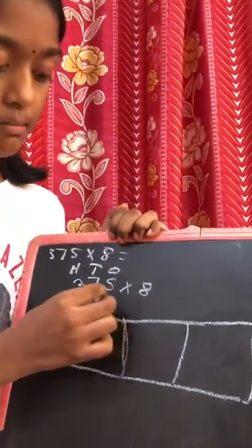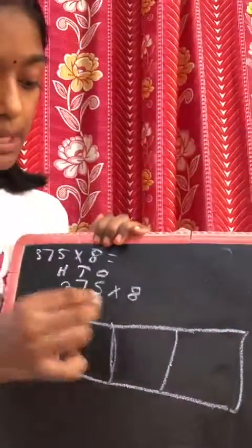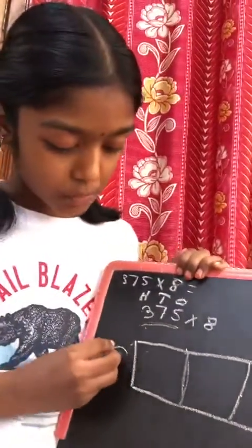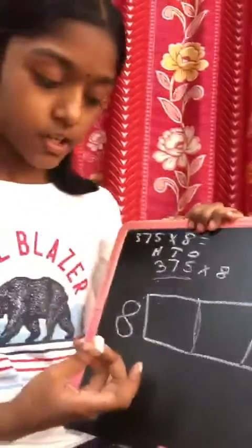So put 8 next to the box. 3 is in the 100's place.